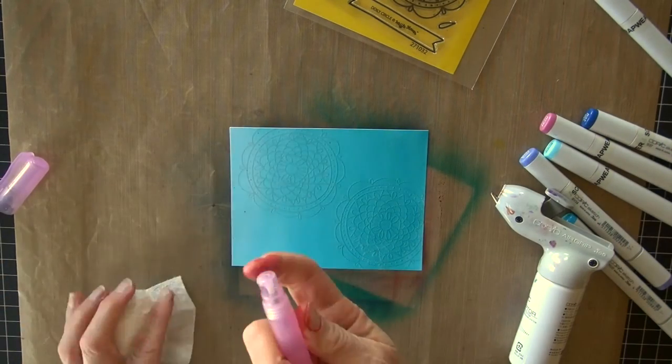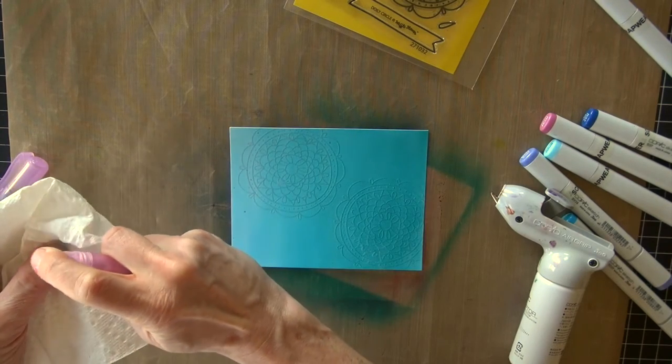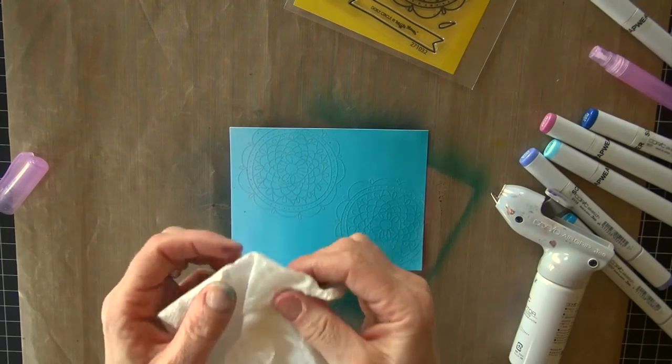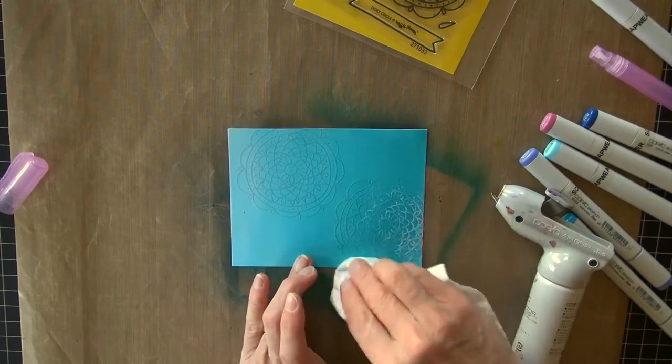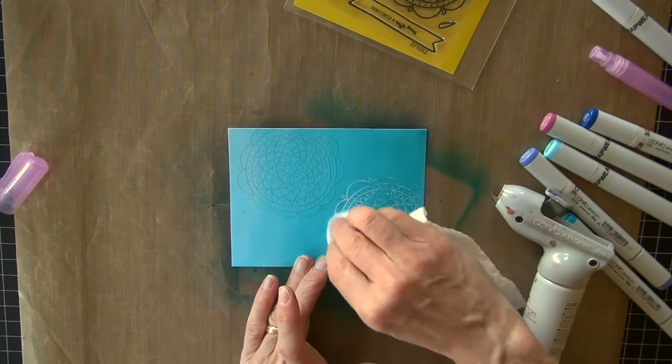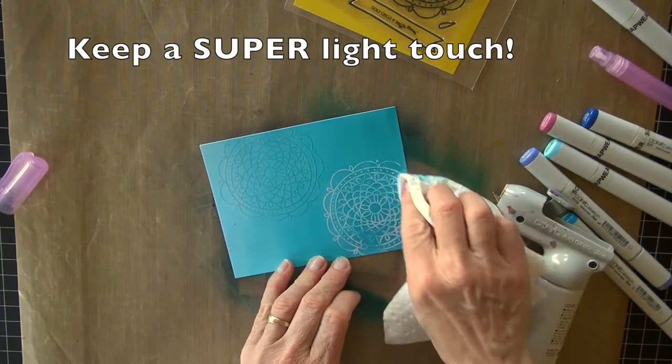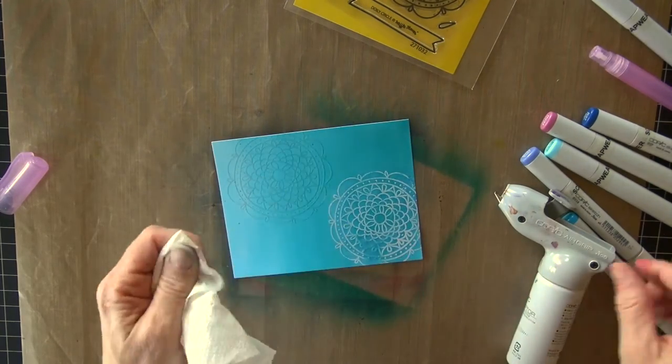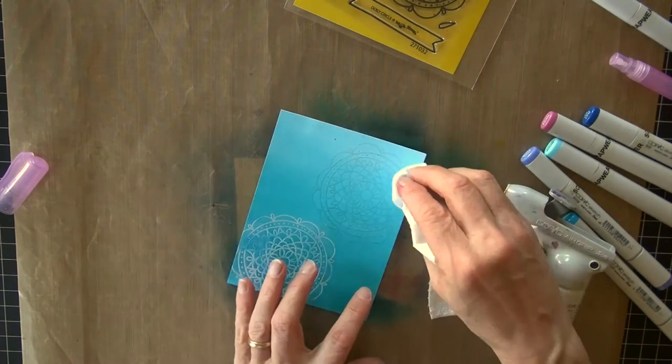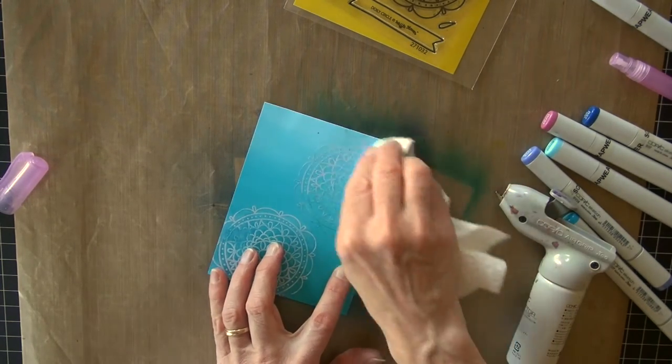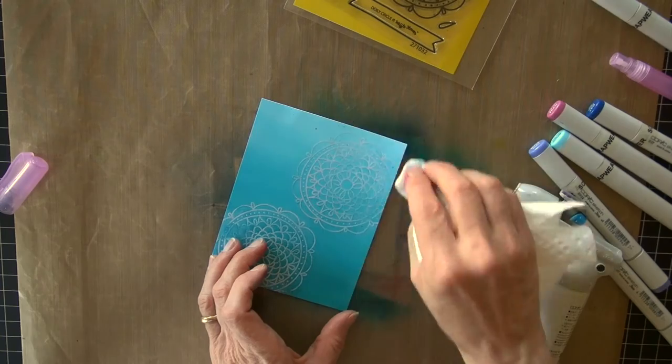I'm going to take a mister with some colorless blender in it. Now you could just take this straight from the bottle. You would not need to have a mister.